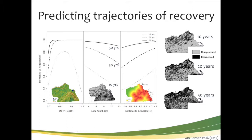Initially after 10 years, only mesic sites have the highest probability of regeneration to 3 meters; drier and wet sites lag behind. Hydric sites in particular have low probabilities, but after 30 to 50 years it's only the wettest sites that tend to restrict or arrest succession. Wider lines are less likely to recover to 3-meter heights, and the further from a road, the more likely recovery. Of course, at 10, 30, and 50 years you can increase recovery rates over time.